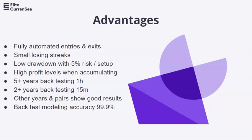Some of the advantages, once again, before I dive into the Bullseye Fibonacci indicator: fully automated entries and exits, small losing streaks, and acceptable drawdown — considering the 5% risk setup and the high profitability potential, especially when accumulating the account rather than taking profits out. This is part of the equity curve shown in backtesting. Years of backtesting on 1-hour and 15-minute charts — other years and pairs also look good besides the euro-dollar. Backtest modeling accuracy: 99.9%.